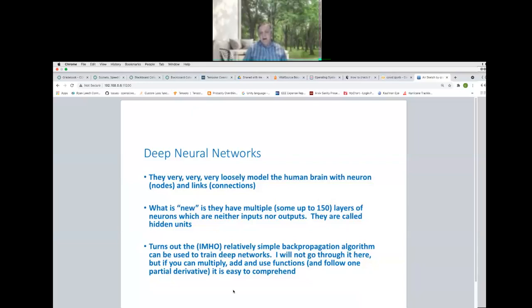So deep neural networks, which are the buzz, they very, very, very loosely model the human brain. And you have neurons or nodes and links, which are connections. And I'll show you pictures in a moment. So what is new about them? When I was a graduate student, neural networks were quite the rage, but they had one hidden layer. So they would not have 150 hidden layers. Hidden layers are things that are neither inputs nor outputs. And they're called hidden units. And it turns out, my voice is doing funny things, sorry. Turns out, relatively simple backpropagation algorithm can be used to train deep neural networks.